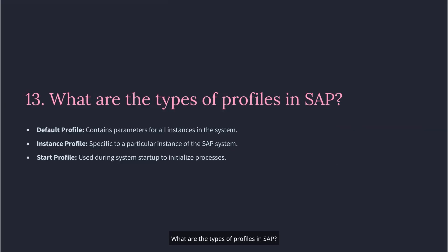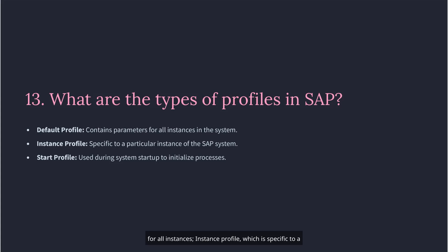Question 13: What are the types of profiles in SAP? There are three types: the Default profile, which contains parameters for all instances; the Instance profile, which is specific to a particular instance; and the Start profile, which is used during system startup.